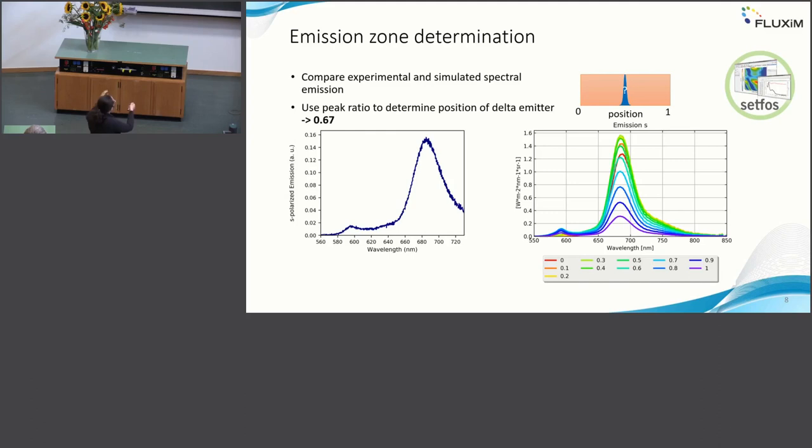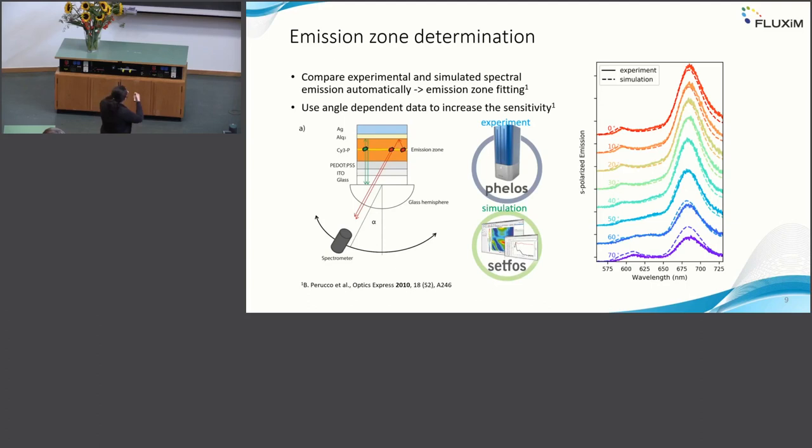You can already determine, if you would assume a delta emitter position somewhere and look at the ratio between these two peaks, you can already say if I would have a delta emitter it would be at 0.67, so the fit fits best. However, then you don't know anything about the width of your emission zone. So we wanted also to look at the width of the emission zone.